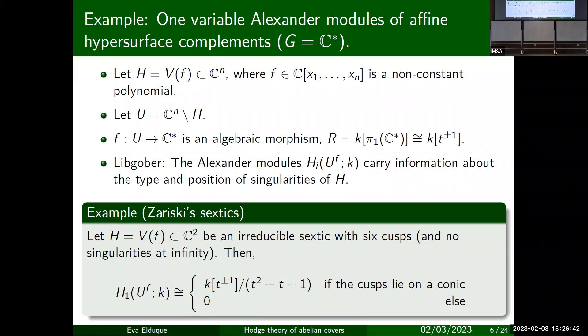The advantage of Alexander modules here is that at least the first one is very computable. Since we're over a PID, you have the structure theorem for finitely generated modules over a PID, so you can easily tell them apart — unlike presentations of the fundamental group, which you can't compare in general. For one variable, this would be the analogous notion of the Alexander polynomial for knots. There's also the notion of Alexander polynomial for links, where if you have a link with several components you want to distinguish them and give a different variable to each component.